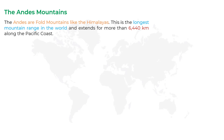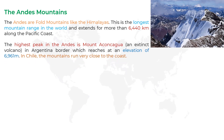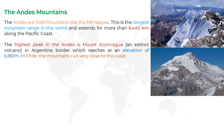The highest peak in the Andes is Mount Aconcagua, an extinct volcano on the Argentina border, which reaches an elevation of 6,961 meters. In Chile, the mountains run very close to the coast. Extinct volcanoes are those which have not erupted in human history.